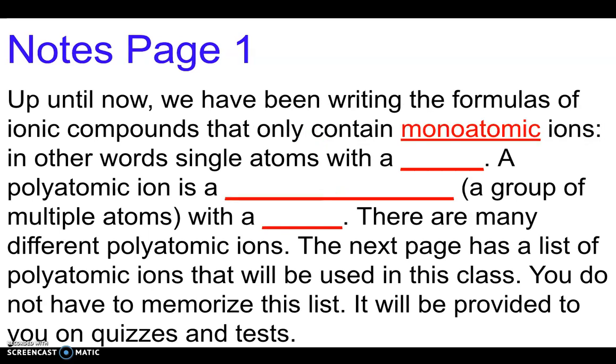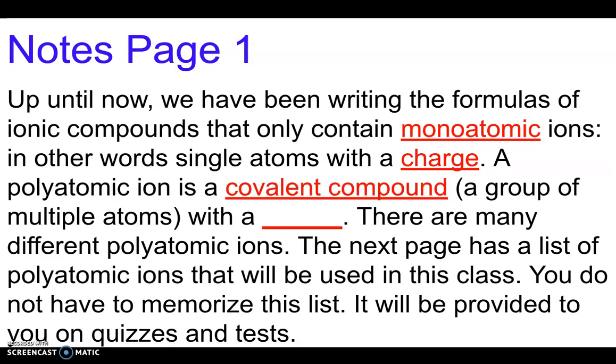Up until now we've been writing formulas of ionic compounds that contain only monoatomic ions - a single atom with a charge. A polyatomic ion is a covalent compound or molecule or group of multiple atoms with a charge. Think of multiple atoms all bonded together, then that whole cluster of atoms has a charge. There are many different polyatomic ions. The next page has a list of polyatomic ions that will be used in this class. You don't have to memorize this list - it will be provided to you on quizzes and tests.